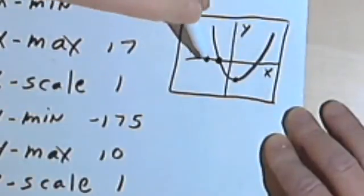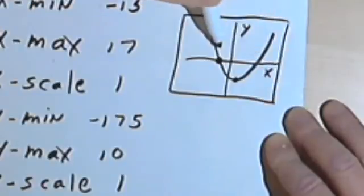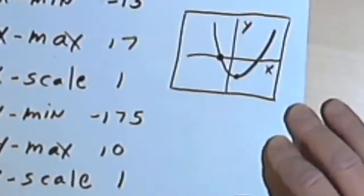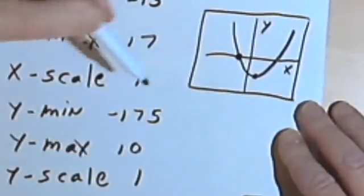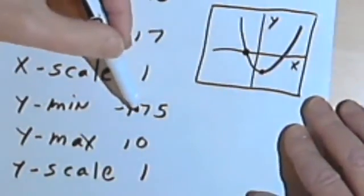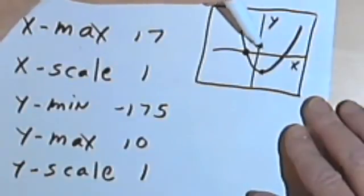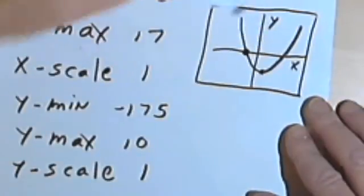And then we want to go up a little bit higher than the x-axis for the y-maximum. I'm just gonna leave it at 10, because when I'm going down as far as negative 175, I want to have a little bit of room above the x-axis. So I'll leave that at 10.